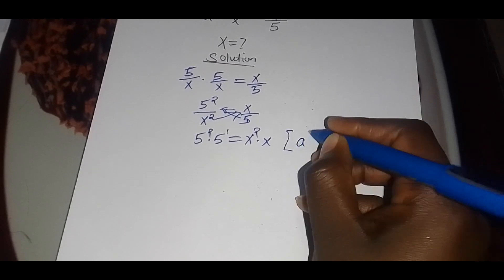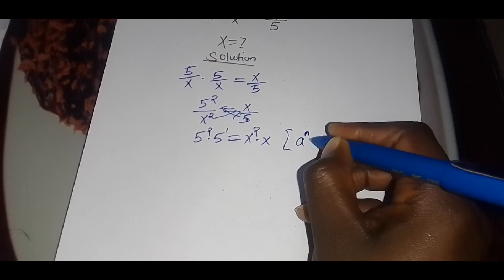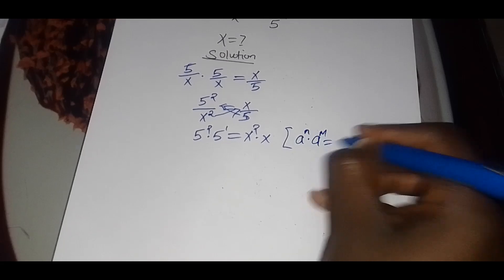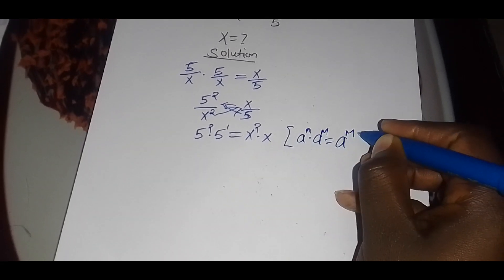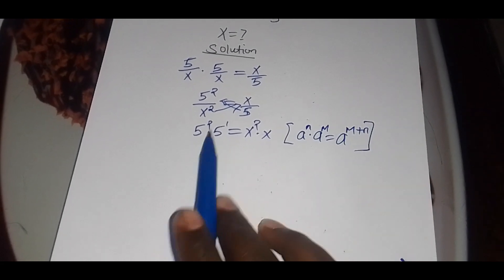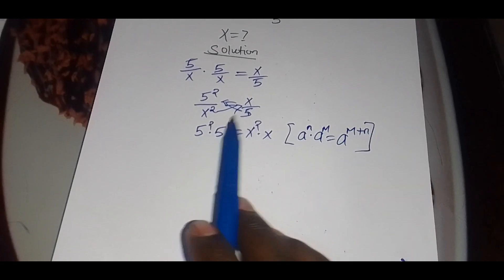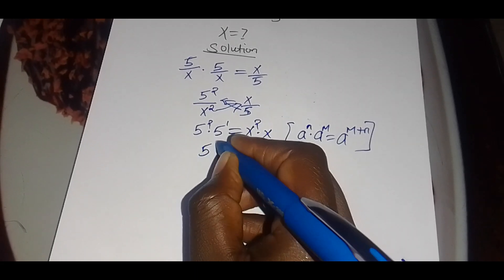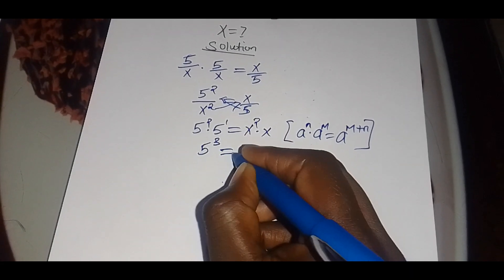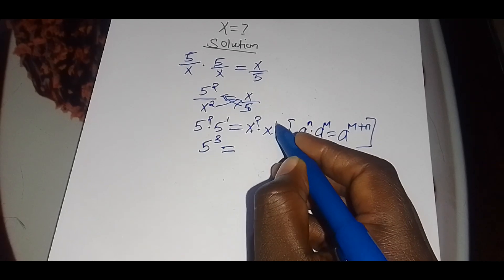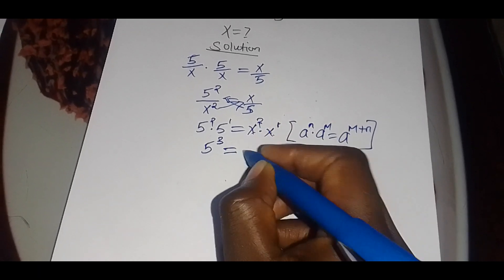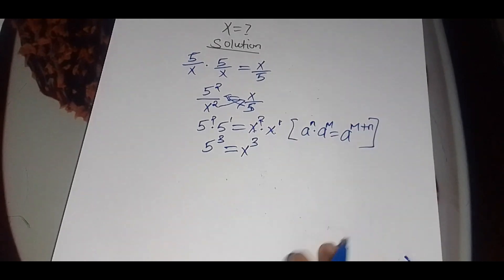Remember, if you have a raised to power n multiplied by a raised to power m, this can be expressed as a raised to n plus m. So for 5 squared times 5, that is 2 plus 1, giving us 5 cubed. The same applies here: x squared times x is 2 plus 1, giving us x cubed. So we have 5 cubed equals x cubed.